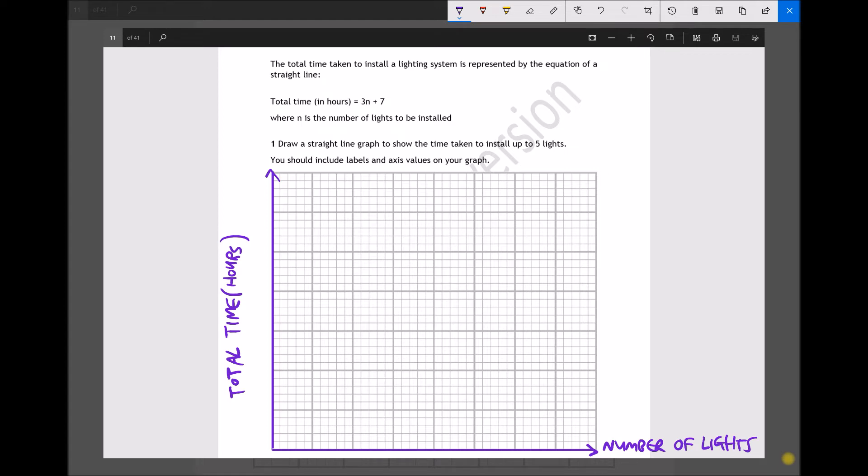The question clearly states that it wants us to include labels and axes values. So on our x-axis, we're going to include numbers: 1, 2, 3, 4, 5, 6, 7. So our graph is going to allow us to go up to 7.